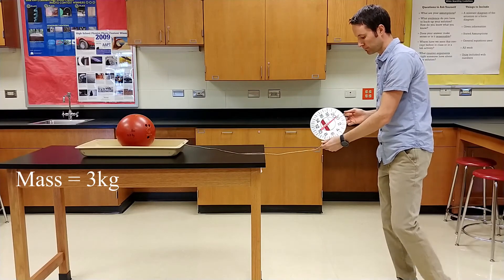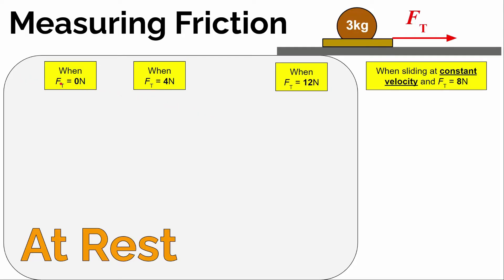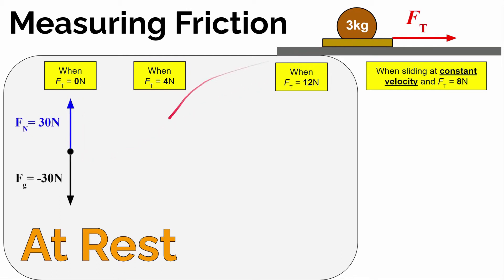Let's look at the force diagrams for a couple of these situations: when I'm not pulling at all, when I'm pulling with 4 newtons of tension, when I'm pulling with up to 12 newtons of tension, and while it was sliding at a constant velocity using about 8 newtons of tension. When I wasn't pulling on it, gravity was pulling down with about 30 newtons and the table was pushing back up with 30 newtons. If I wasn't pulling with a force to the right, that means there was no frictional force back to the left — it wasn't experiencing any frictional force.